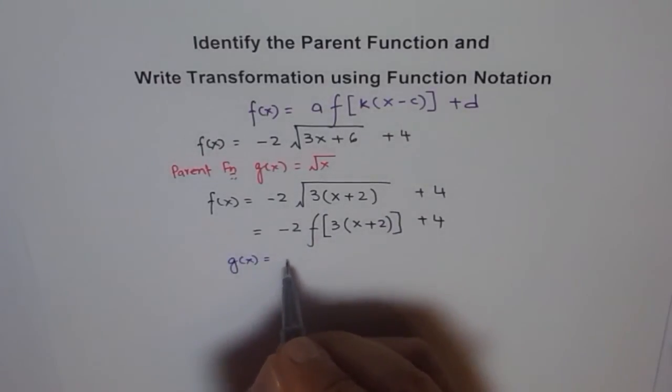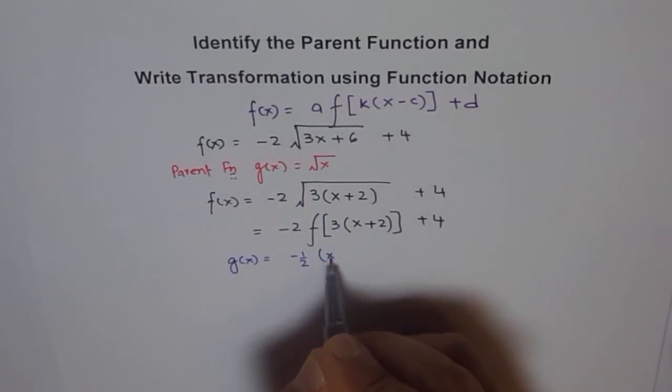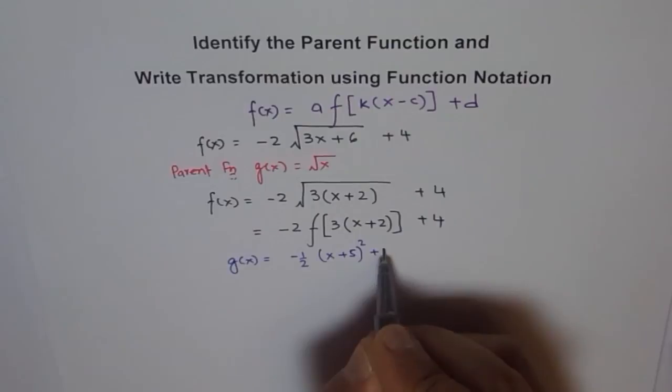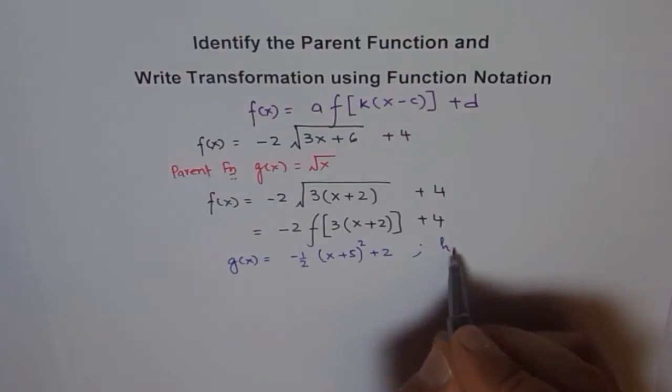Write this function, let's say g of x equals to minus half, x plus 5 whole square, plus 2.